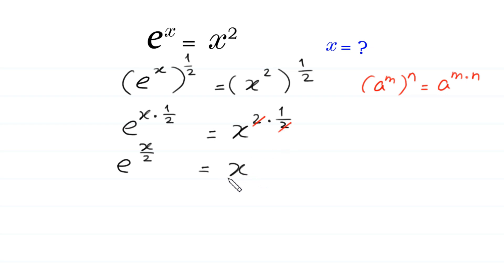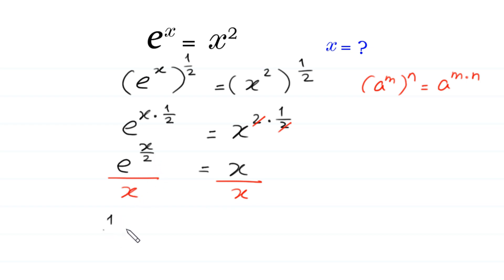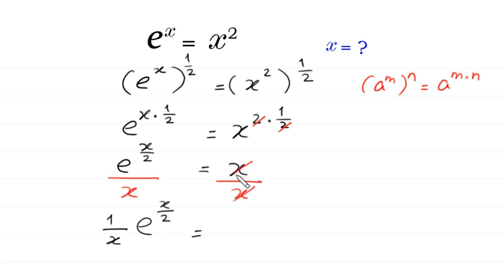Next, we divide both sides of this equation by x. We can write e to the power x over 2 divided by x as 1 over x times e to the power x over 2, which is equal to 1 on the right side.